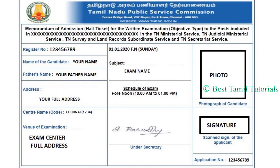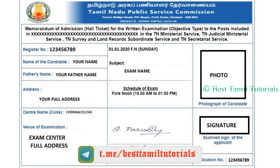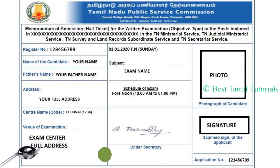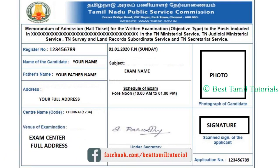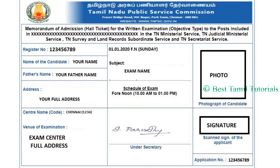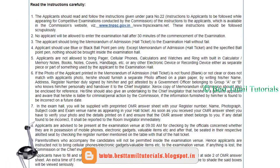You will get all of them in the hall ticket. First, registration number, candidate name, father name, full address, and center name and code. You can check the exam, the application number and 9 digits. You can check the photo and signature. This is your hall ticket. You can check the instruction.